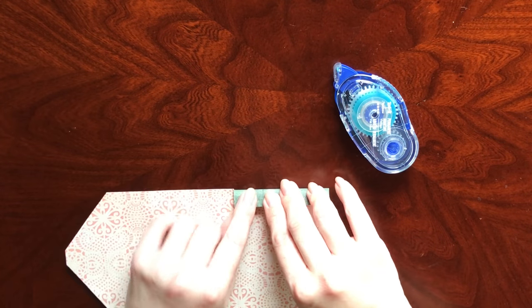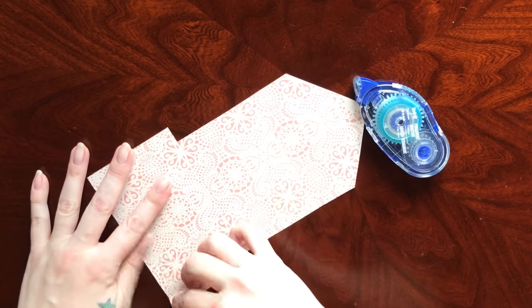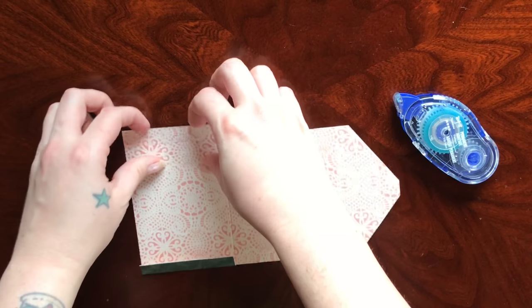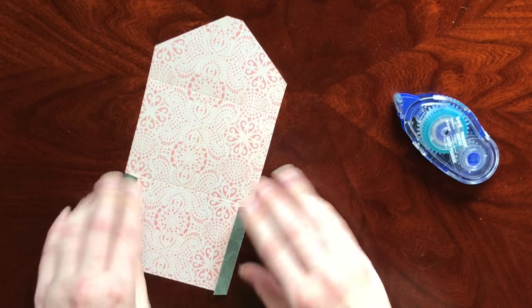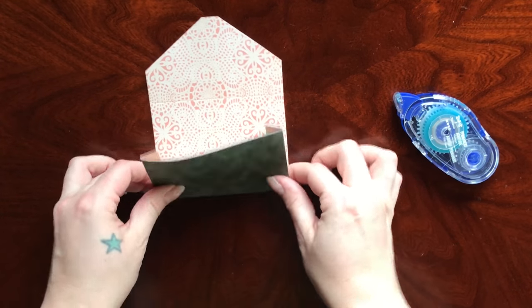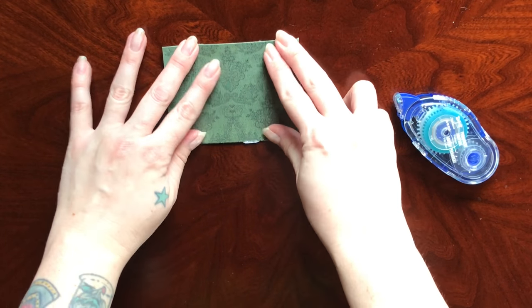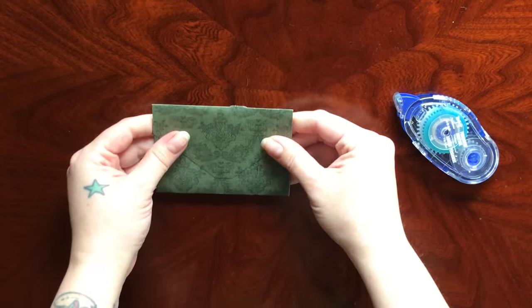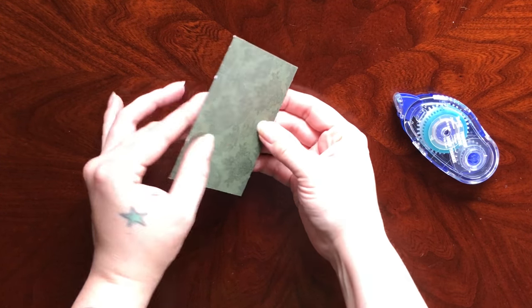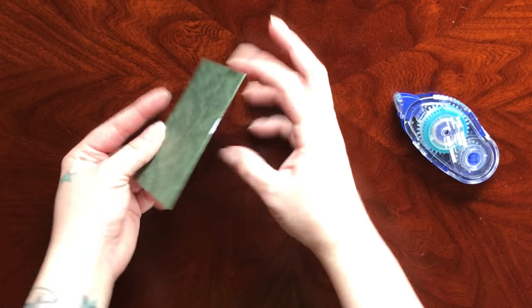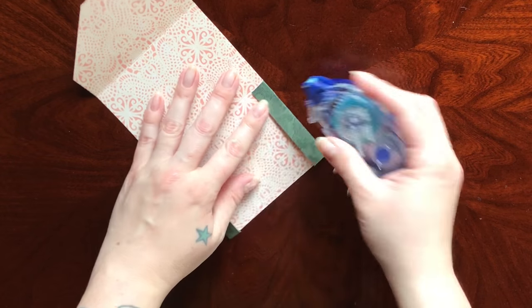Now we're going to fold everything over. Depending on your cardstock, if it's pretty stiff like this one, it will give a little bit of a frayed edge. I like a worn-in look, so I don't mind, but just keep that in mind.